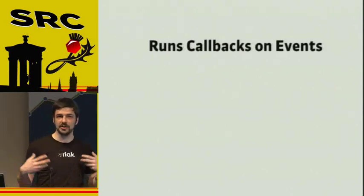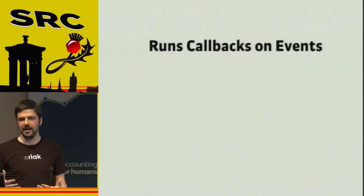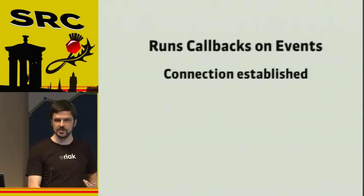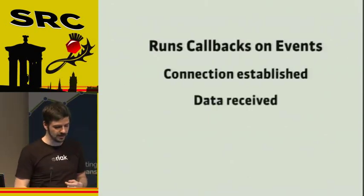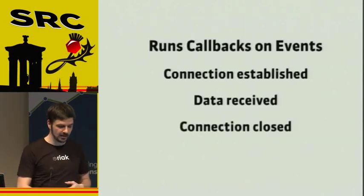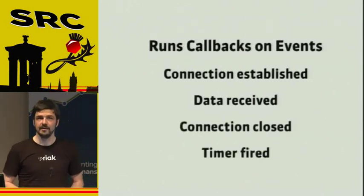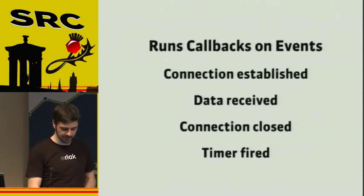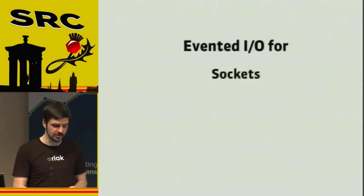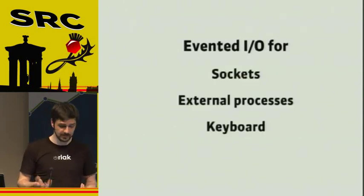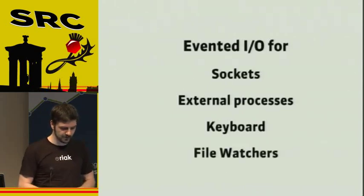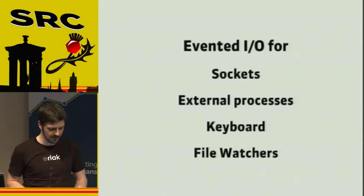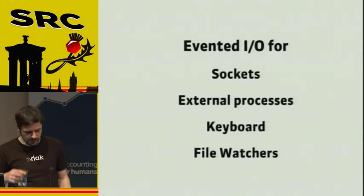EventMachine can run callbacks containing your logic on a couple of events: when a connection is established, when you receive data from a socket, when a connection is closed, or when a timer is fired. The timer is kind of nice because you can say: in a second, just fire this block. You can do evented IO for sockets, external processes, the keyboard, and stuff like file watchers — so like, when this file changes, just let me know.